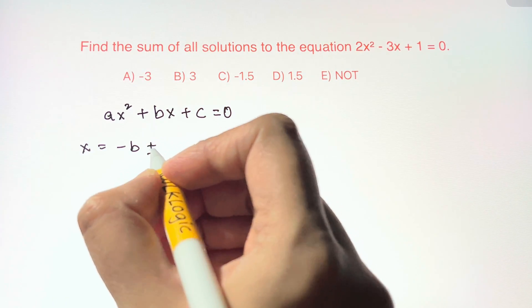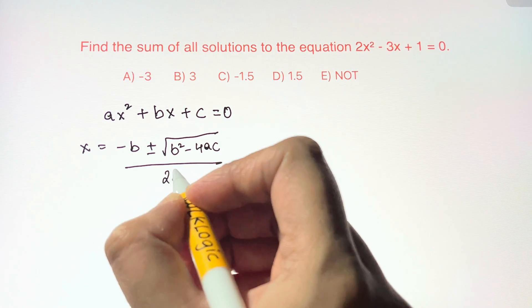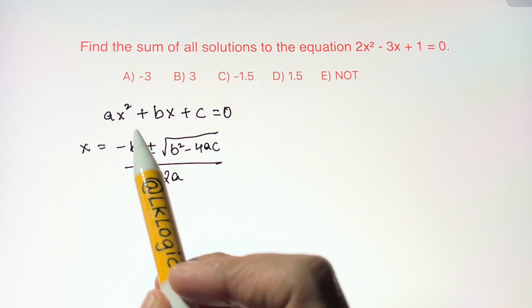We can find the solutions using the quadratic formula which is the following: x = -b ± √(b² - 4ac) / 2a.